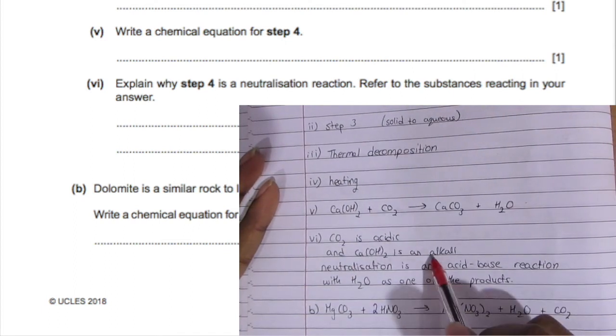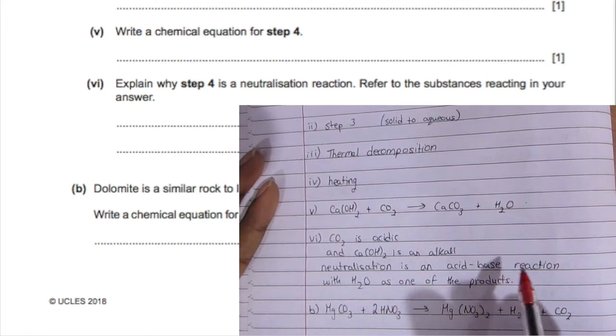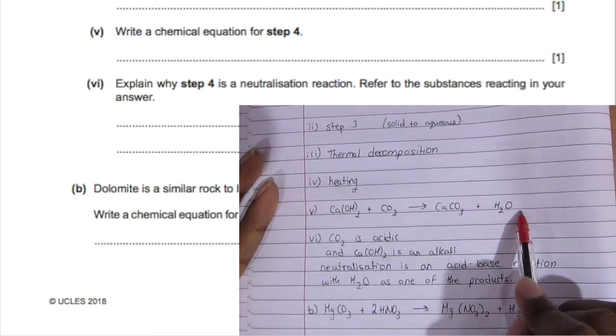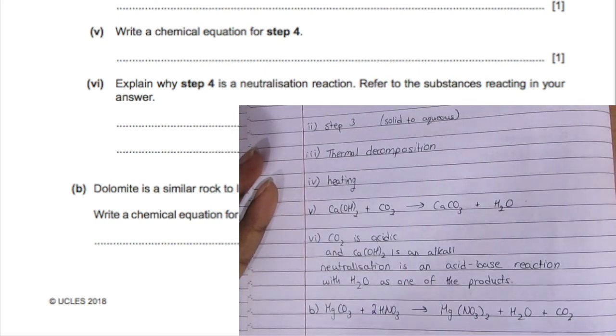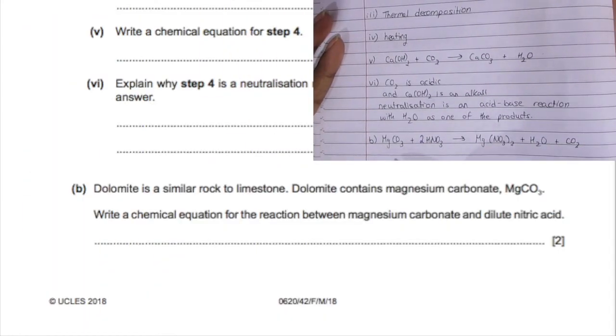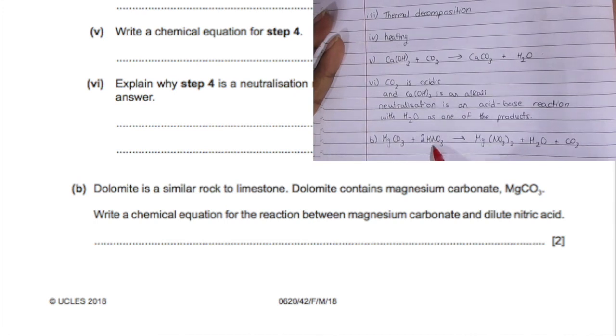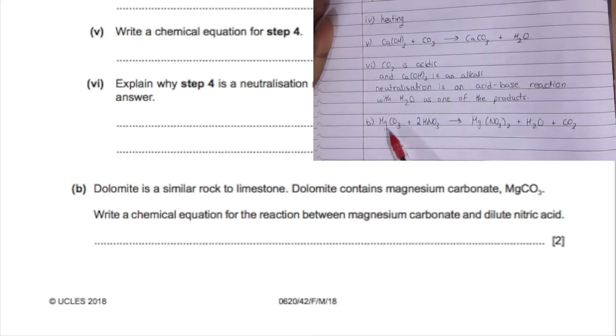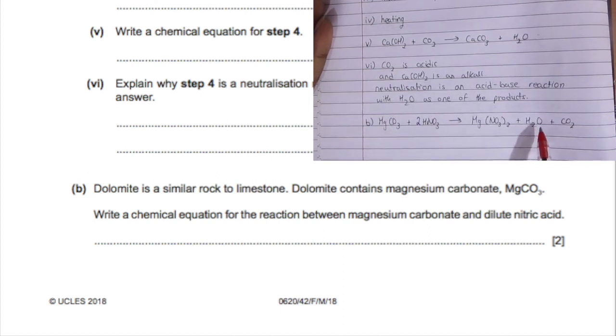We have another substance similar to calcium carbonate, which is dolomite. Write out the chemical equation for dolomite reacting with dilute nitric acid. Magnesium carbonate plus dilute nitric acid will give you magnesium nitrate plus water plus carbon dioxide. It's the same thing, you have calcium carbonate, magnesium nitrate, water, and carbon dioxide. Make sure that there's a carbon somewhere, so that would have been carbon dioxide. Make sure to balance it out.